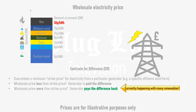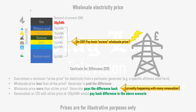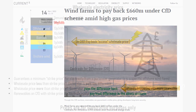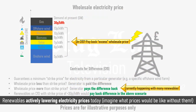In the above scenario, since the wholesale price is 30 pence per kilowatt hour, the offshore wind farm must pay back 17 pence per kilowatt hour of electricity that it provides to the grid. This is currently happening with many renewables. In fact, it's estimated that wind farms will pay back £660 million between October 2021 and April 2023 under contracts for difference. So renewables are actively lowering electricity prices today — imagine how expensive electricity would be without them.